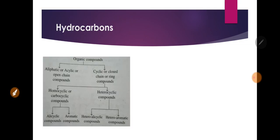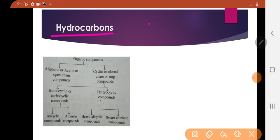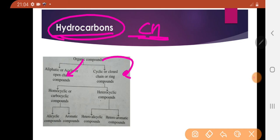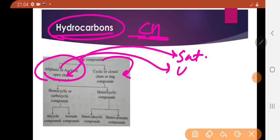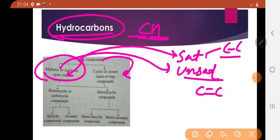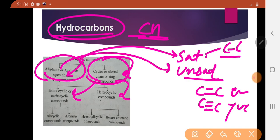Carbon compounds are set with hydrocarbons because along with carbon, they contain hydrogen. Organic compounds or hydrocarbons can be classified into aliphatic (acyclic) and cyclic (closed or ring) compounds. Aliphatic compounds can be saturated — with carbon-carbon single bonds — or unsaturated — with carbon-carbon double bonds or carbon-carbon triple bonds.